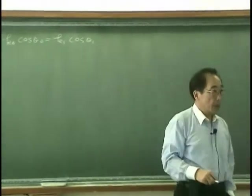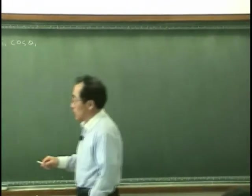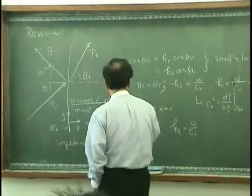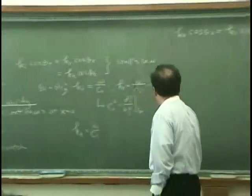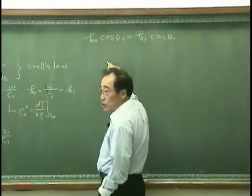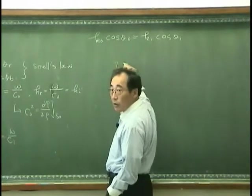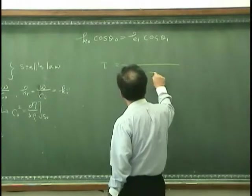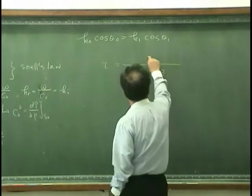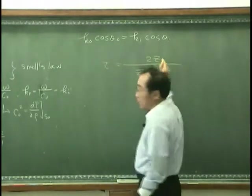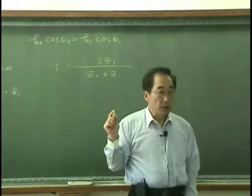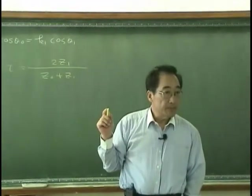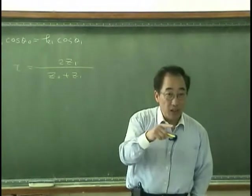Also, the pressure and velocity continuity lead us to the transmission coefficient tau, which is 2Z_1 over Z_0 plus Z_1. And in this case, the impedance is referred to as what? Oblique wave impedance, or oblique impedance.